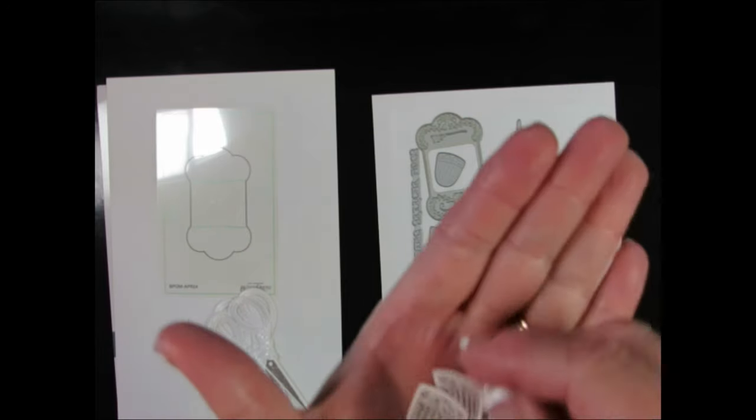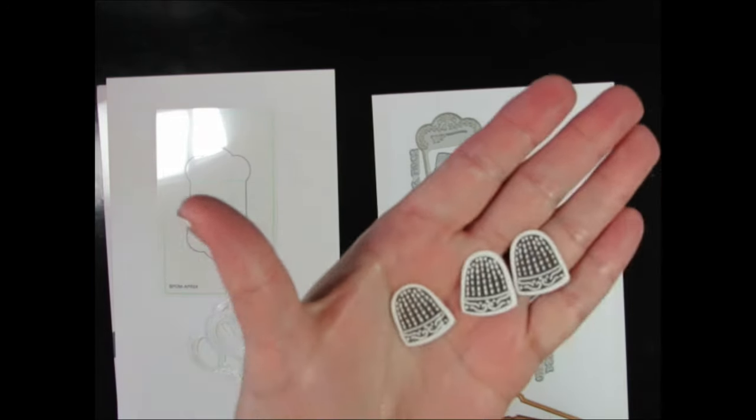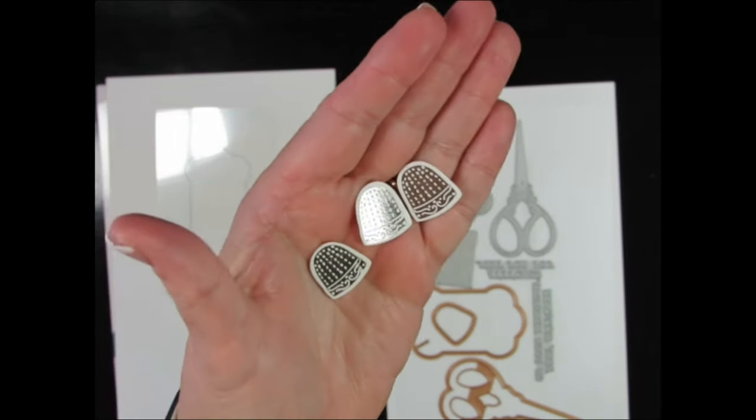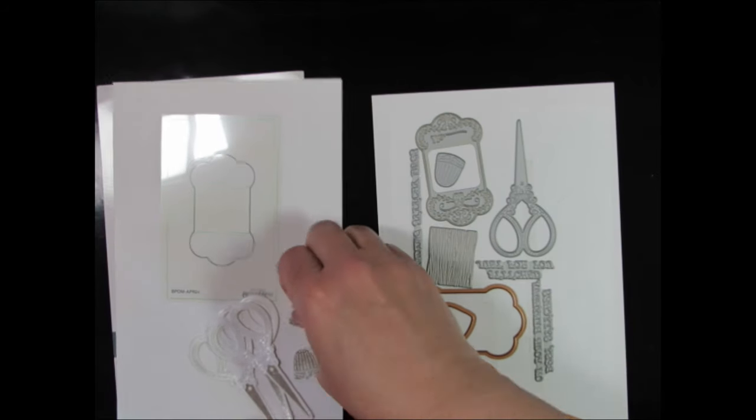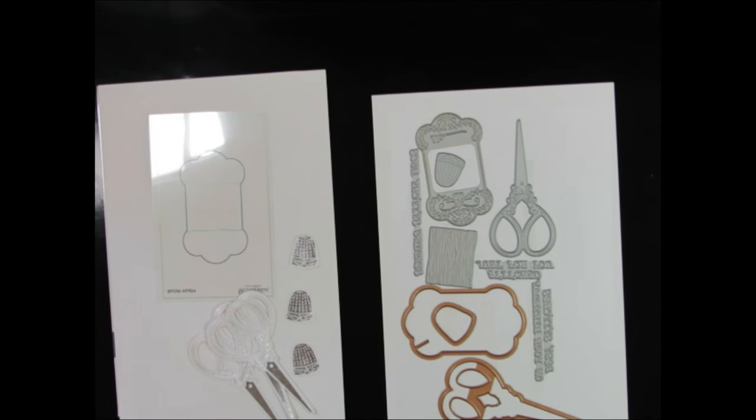I did the same thing with the thimbles. I made three of those with silver hot foil—oh, they turned out really nice. The third cutting die cuts out the bobbin.